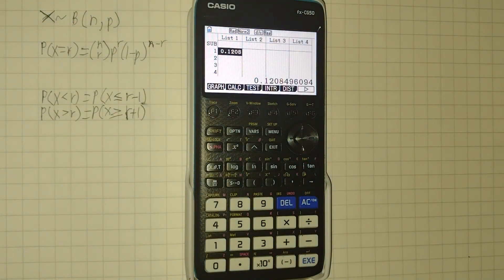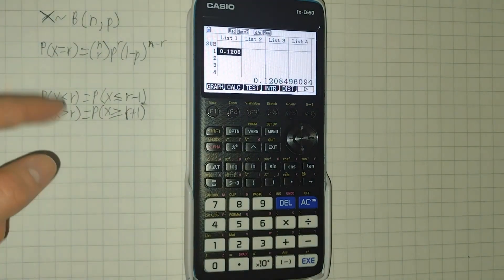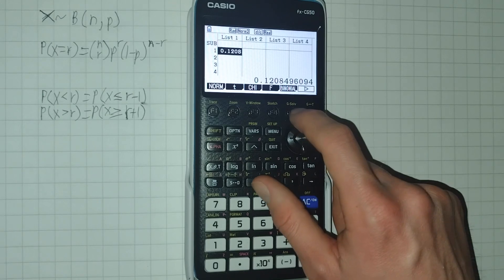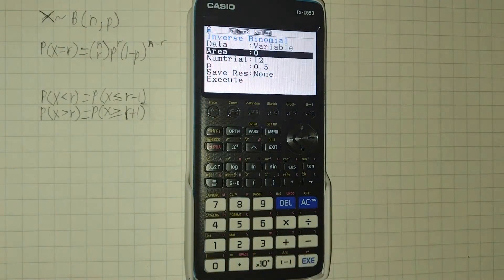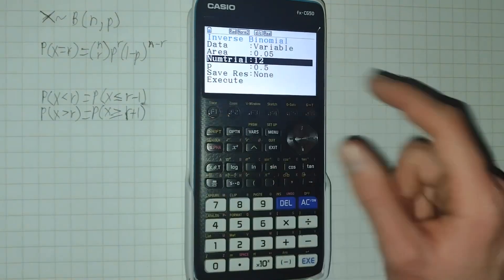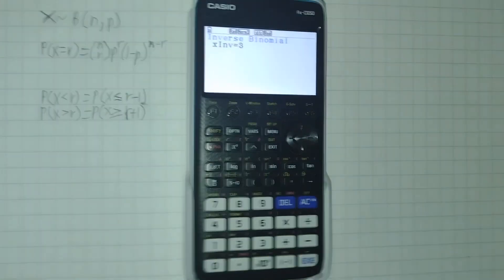Okay, so the final thing you may need to do, such as when performing a hypothesis test and finding critical regions, is to know what value of R, or R minus one or R plus one, you need to have this probability be above or below a certain value. So for this, we can again go dist, F5 again for binomial, and this time we'll click F3 for inv B, or inverse binomial. And we'll set our area to the probability we're aiming for. So let's say we want a probability of less than 0.05. We're doing this 12 times, and P is 0.5. And we get an inverse of three.